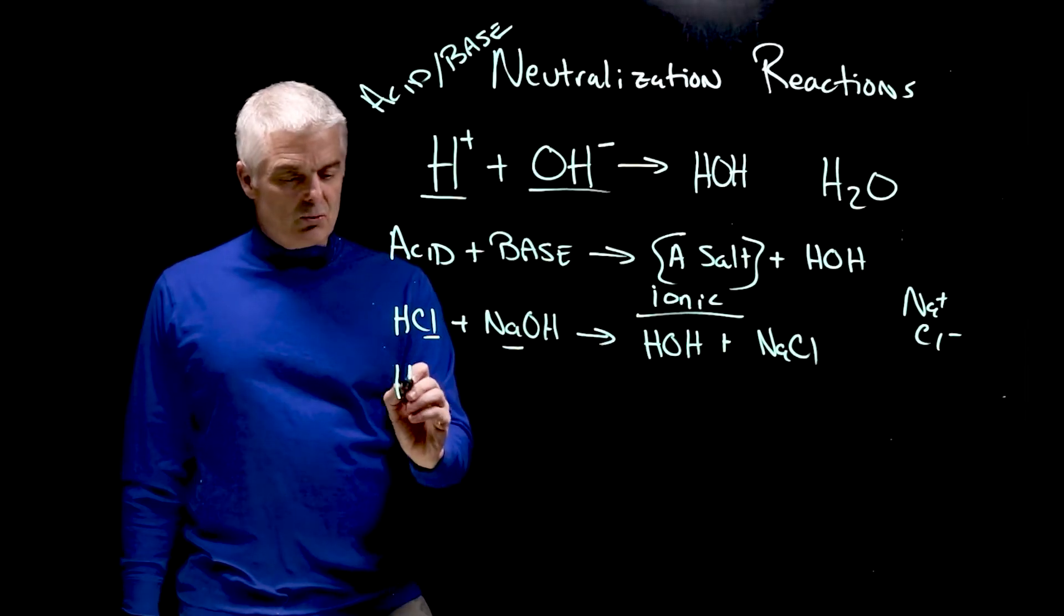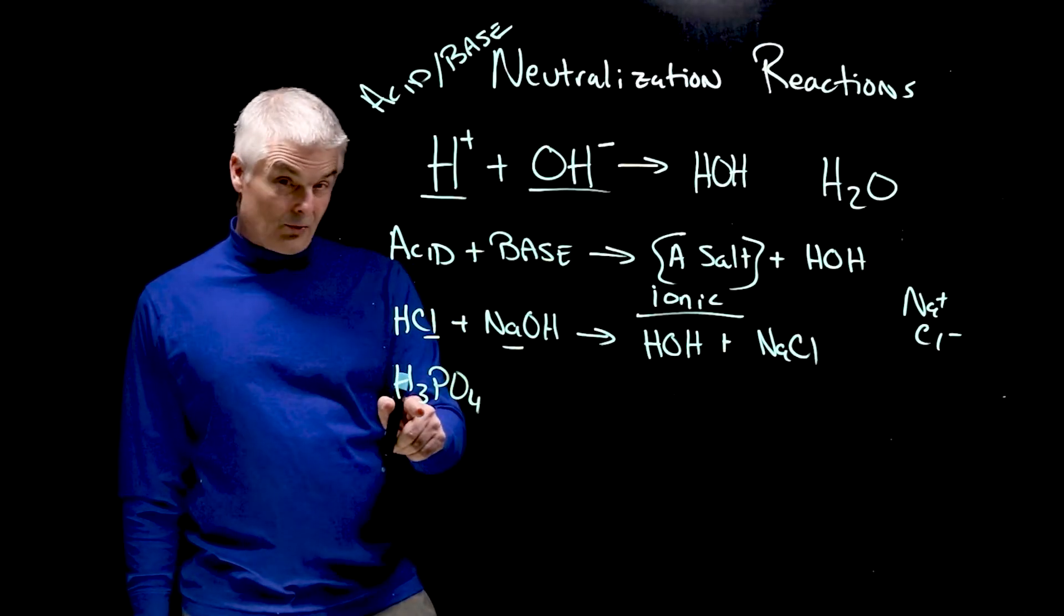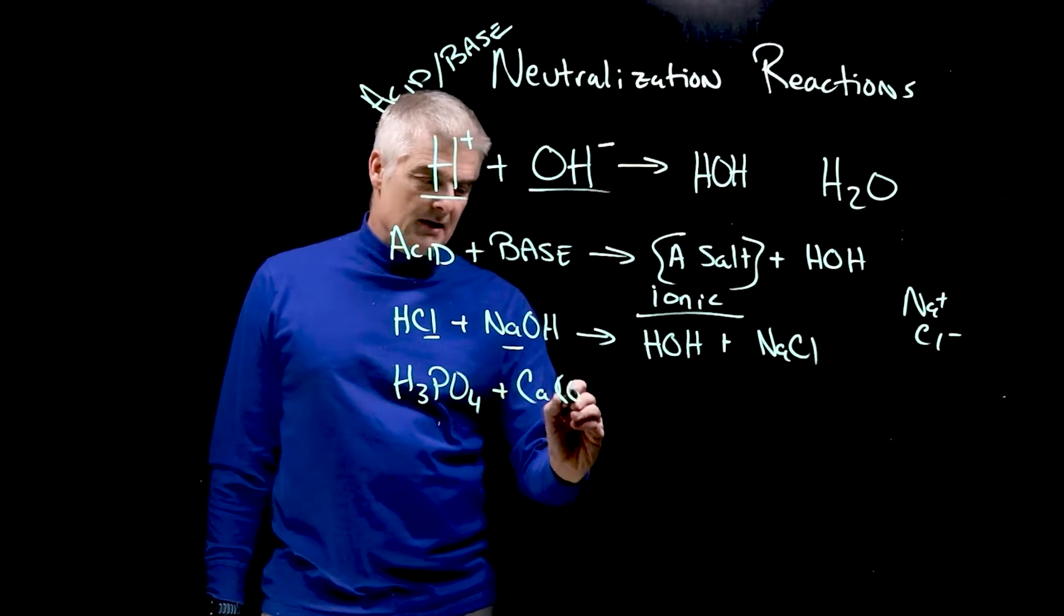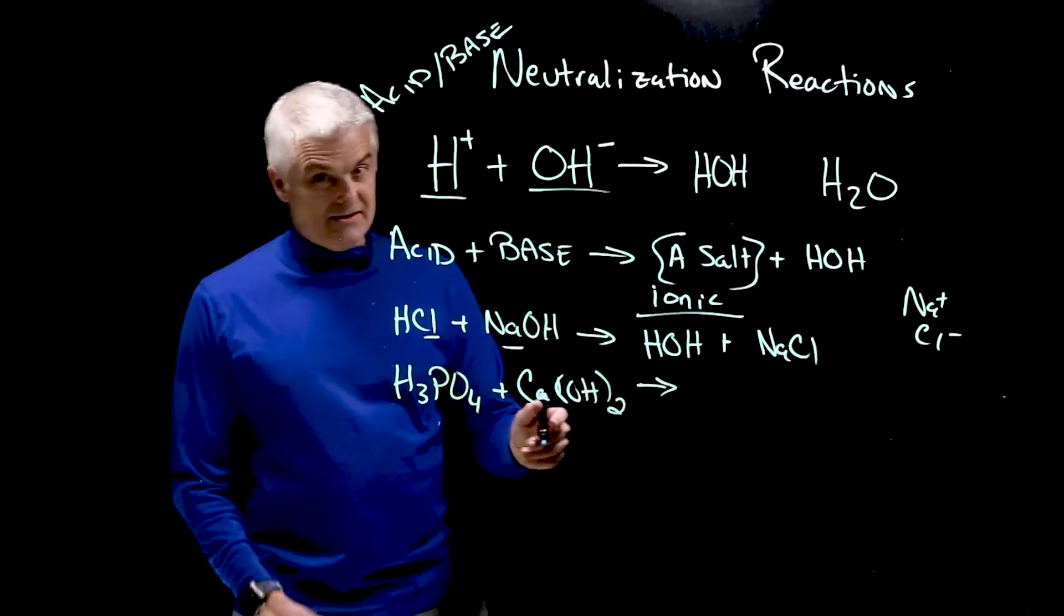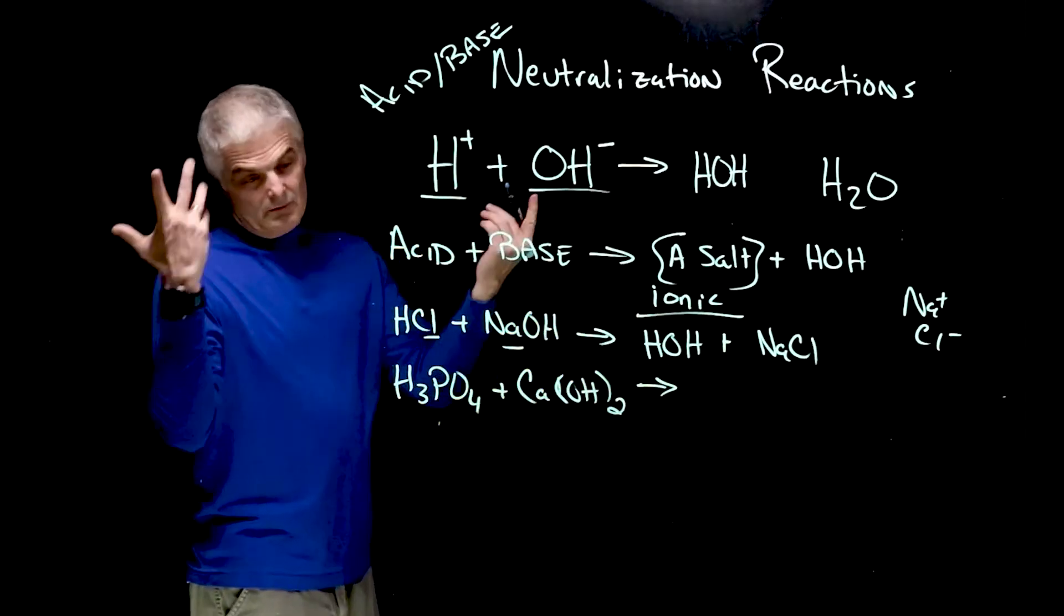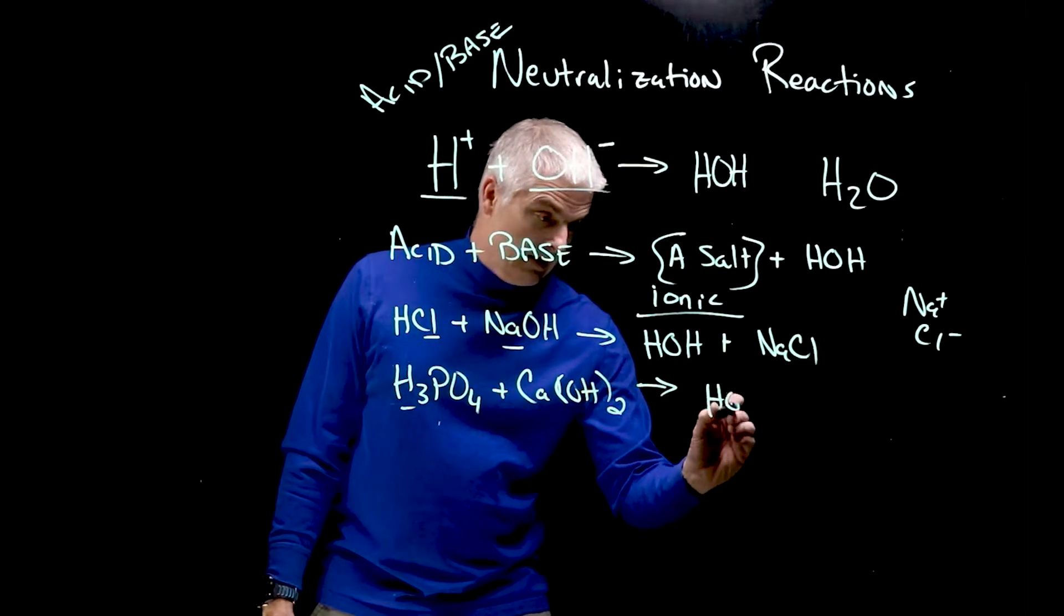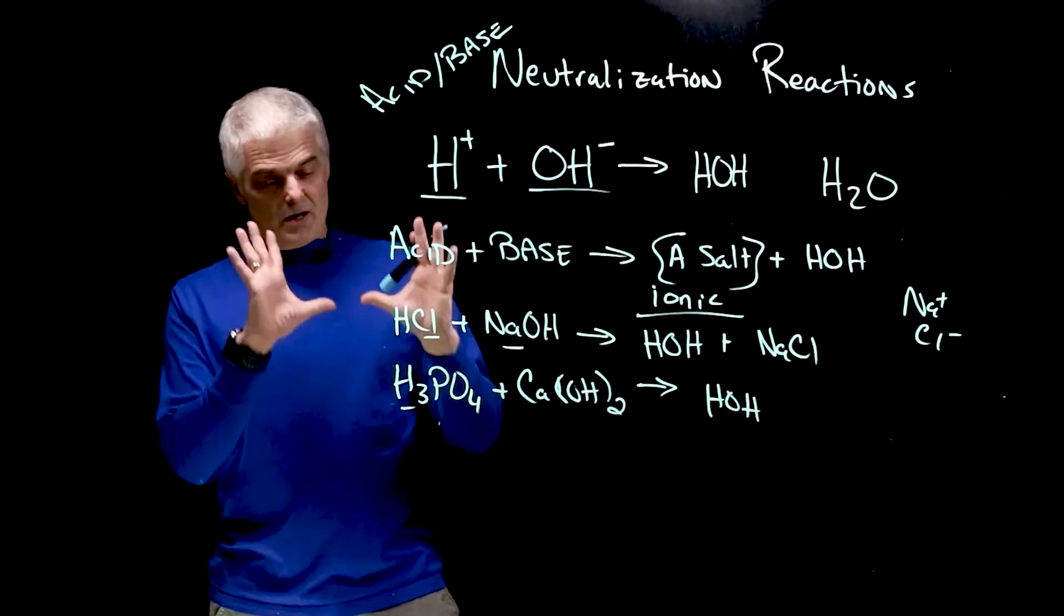Let's do one that's a little more complex. What if I take H3PO4, phosphoric acid, notice there's three of these, plus calcium hydroxide. Now calcium hydroxide has a positive two, negative two. It's going to make a salt and water. Let's make the water first, HOH. This H, these OHs, HOH. Now I have to then rethink this. This is a double replacement reaction. You've probably seen these before.